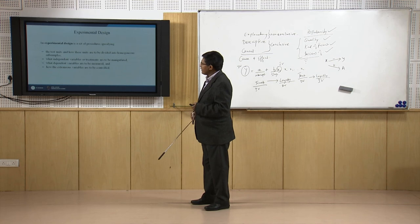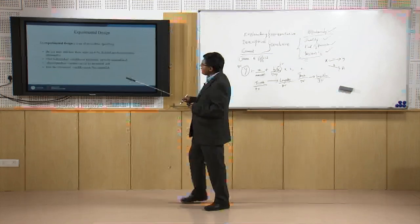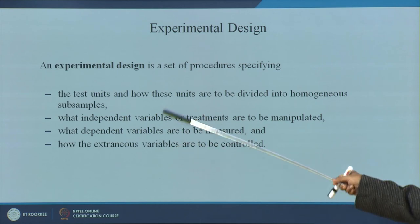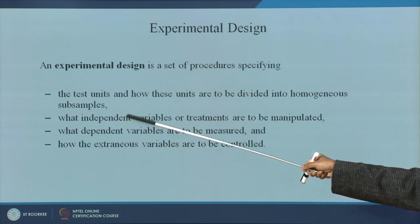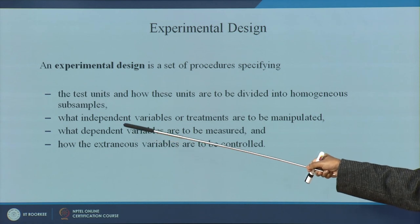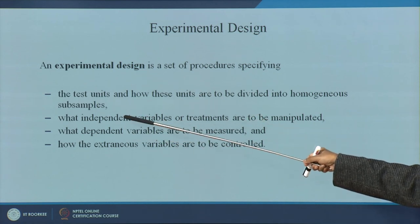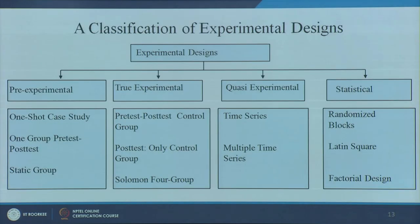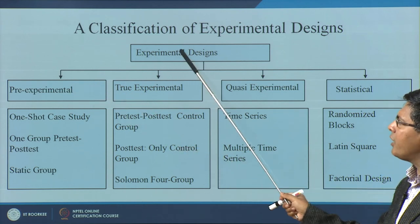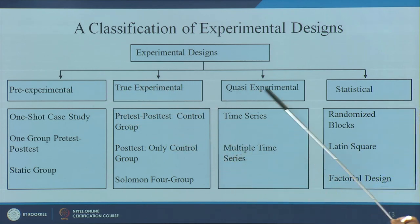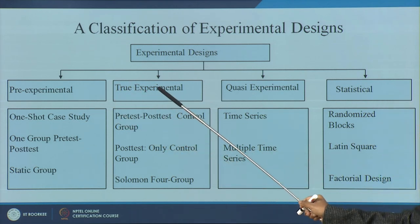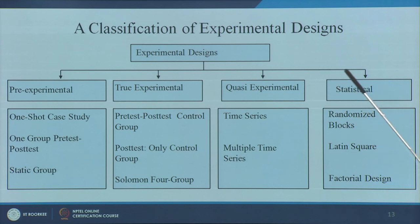Let us see some experiment designs. The components are test units, independent variables, dependent variables, and extraneous variables. Experimental designs are divided into four categories: pre-experimental, true experimental, quasi-experimental, and statistical.